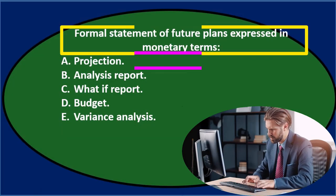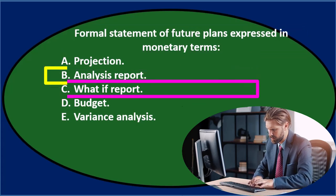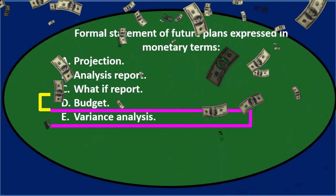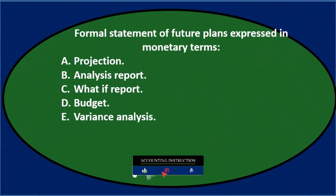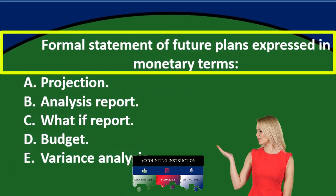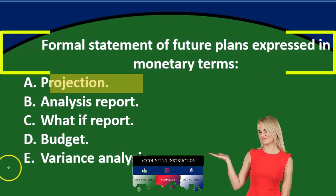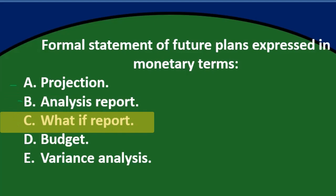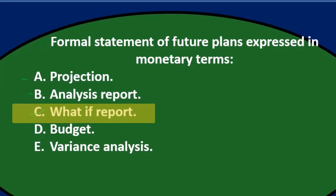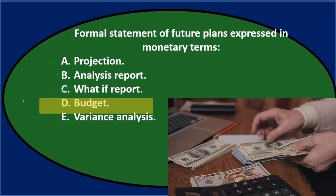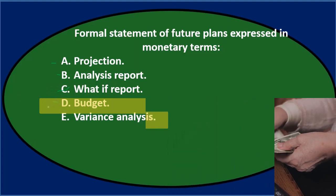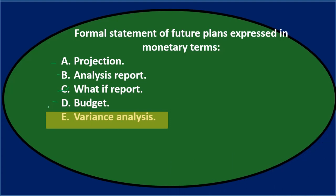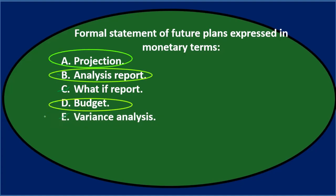Question one: 'Formal statement of future plans expressed in monetary terms.' The answer choices are: A — projection, B — analysis report, C — what if report, D — budget, E — variance analysis. Using process of elimination: C, 'what if report,' sounds informal — cross that out. E, 'variance analysis,' is related to budgets but not the definition here. We're left with A, B, and D.